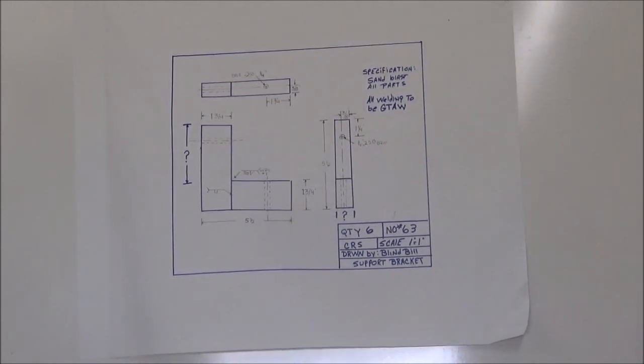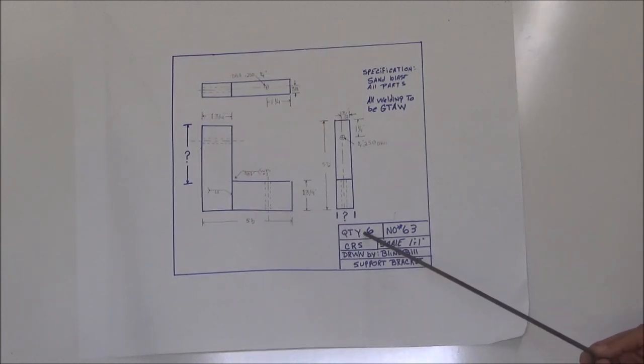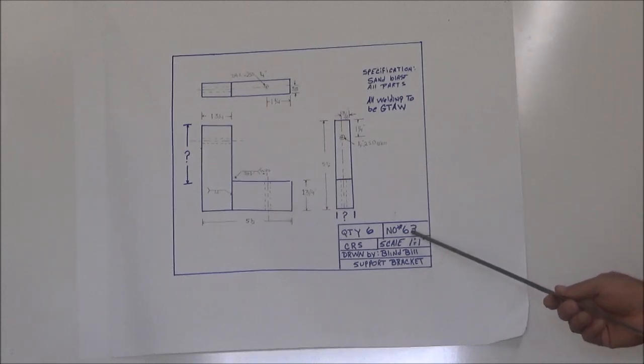Okay, and then it's going to ask us, how many of these are required? Well, now once again, we can find a lot of information in our title block, and if we look down here, we can see that the quantity is six. What's the order number on this particular order? Well, if we look up here, we can see that it's number 63 is our order number.